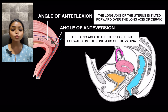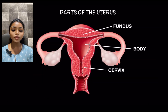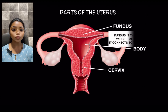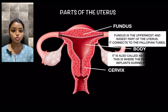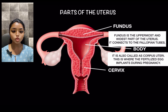The uterus consists of the fundus, the body and the cervix. The fundus is the uppermost and widest part of the uterus; it connects to the fallopian tube. The body of the uterus is also called the corpus uteri. This is where the fertilized egg implants during pregnancy.